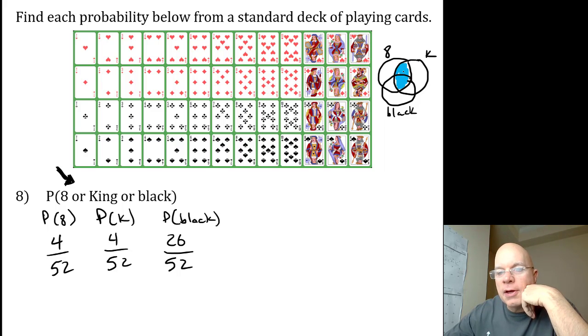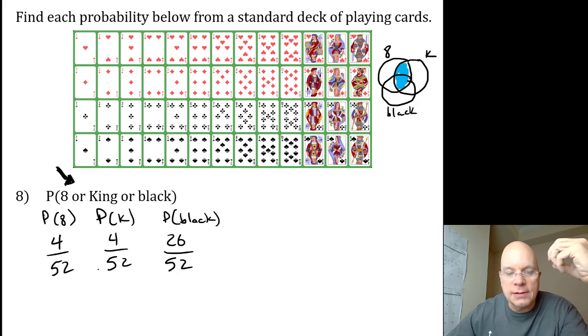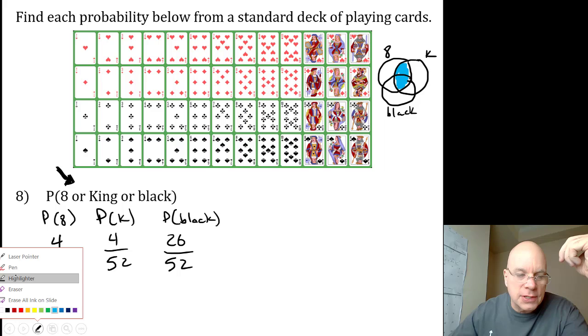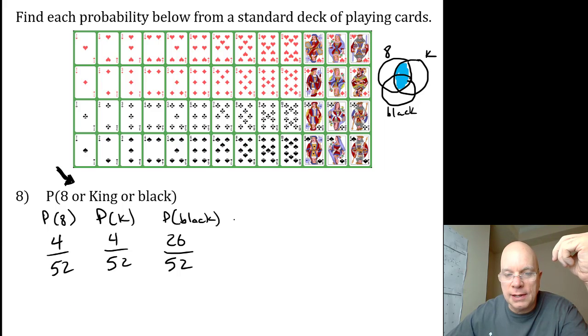This intersection, the cards that are eights and kings, would need to be subtracted away. And if you're saying to yourself, you can't be an eight and a king. Yeah, I know.